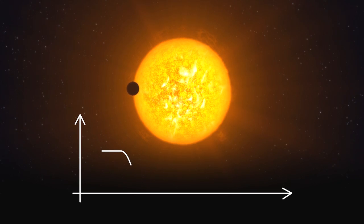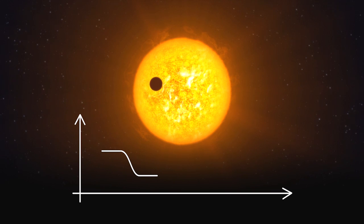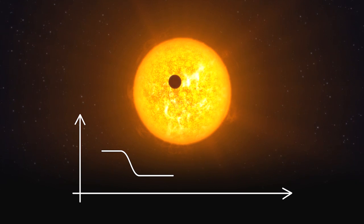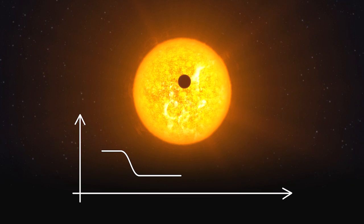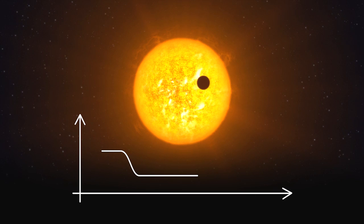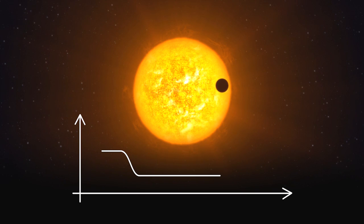Today, many exoplanets are discovered when they transit across their parent stars. If we happen to see the planet's orbit edge-on, it will pass in front of its star every cycle. Thus, tiny, regular brightness dips in the light of a star betray the existence of an orbiting planet.